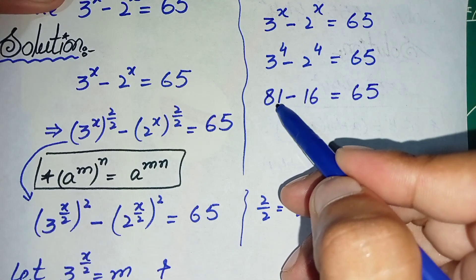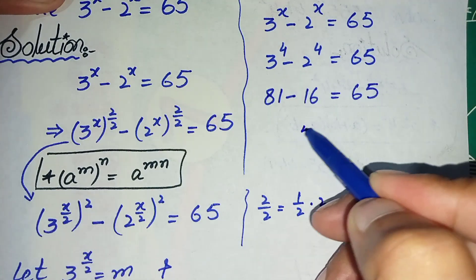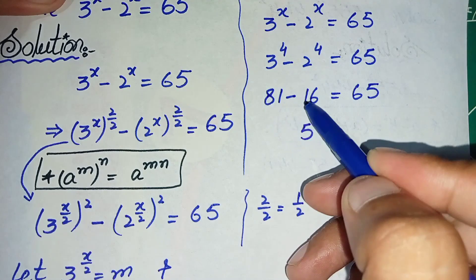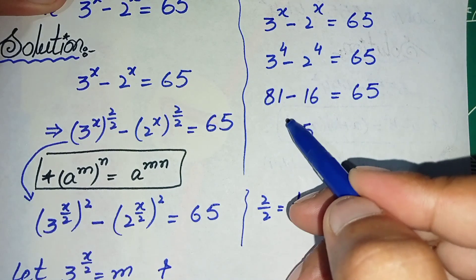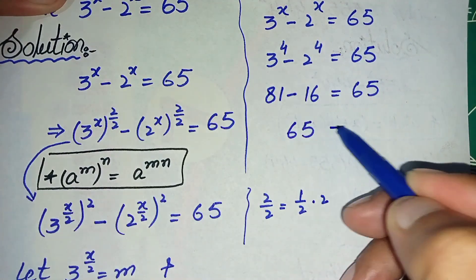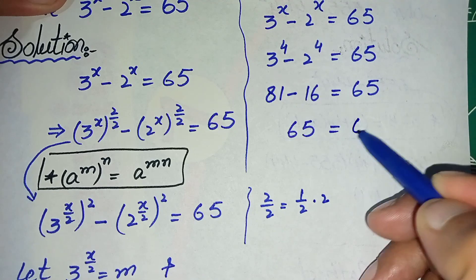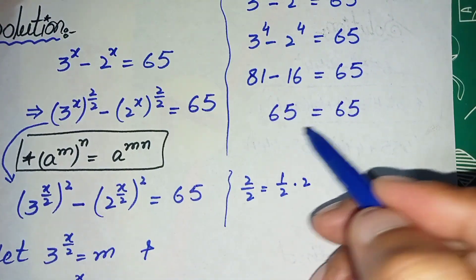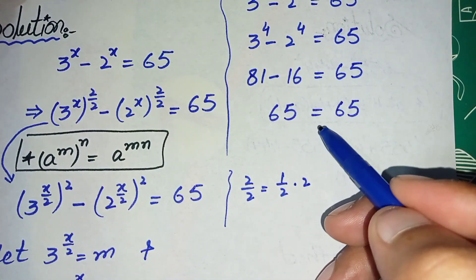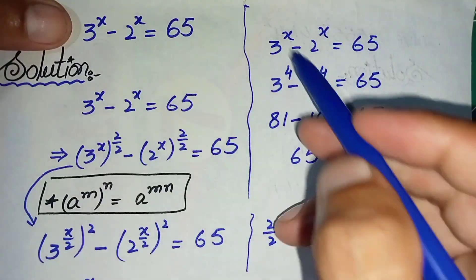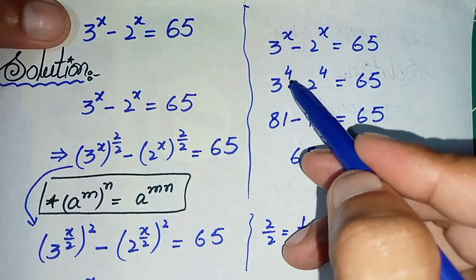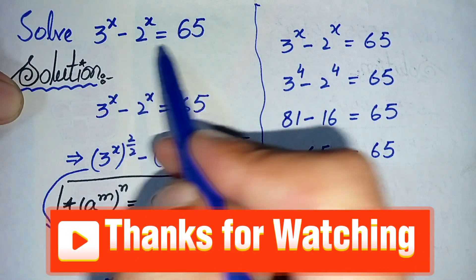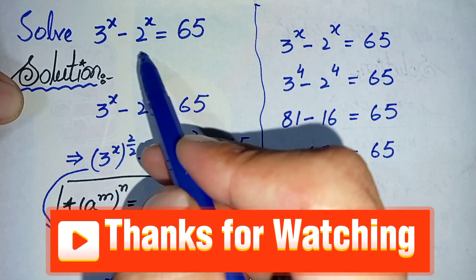So we get 81 minus 16, which equals 65. Since both sides are equal, x equals 4 is confirmed as the exact and correct root of this exponential math problem.